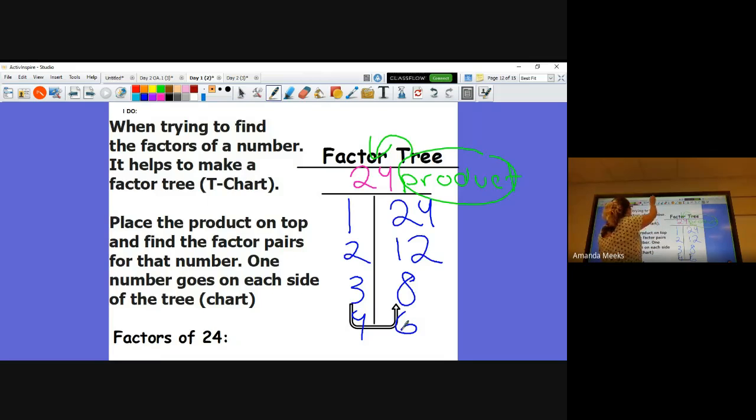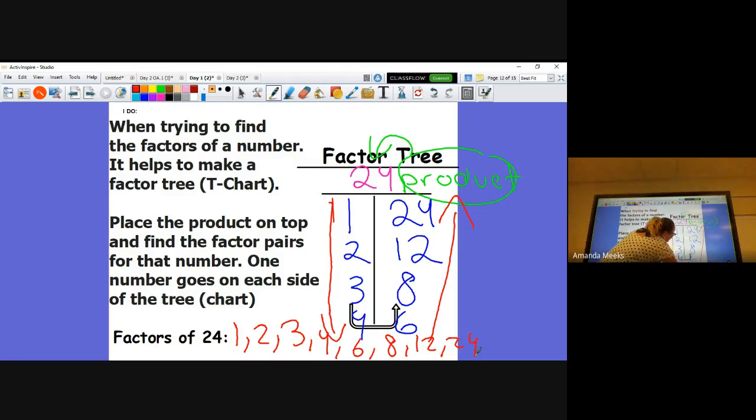So I have several ways I can write this. I can write the factors of 24 and I can simply write them going down this way and then go up on this side. This is going to be called your factor rainbow or factor arc. You can go 1, 2, 3, 4, 6, 8, 12, and 24.